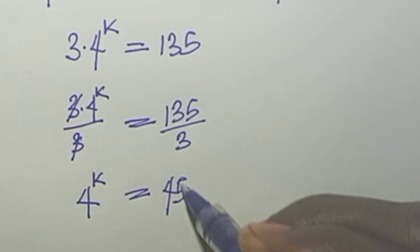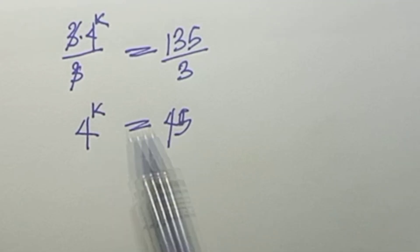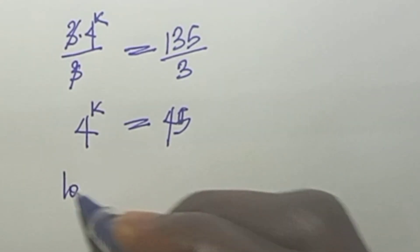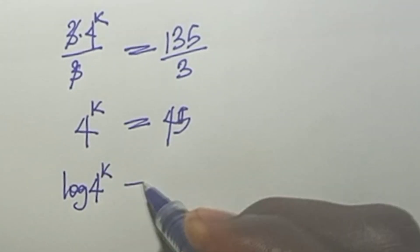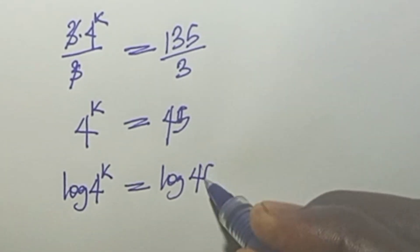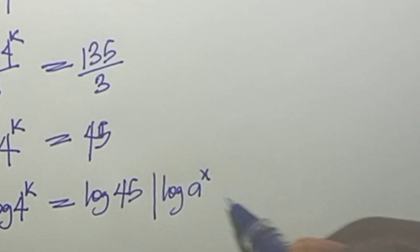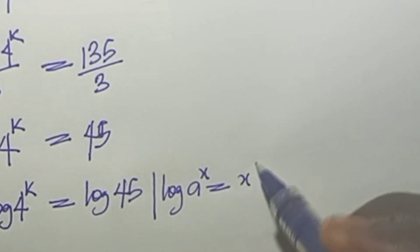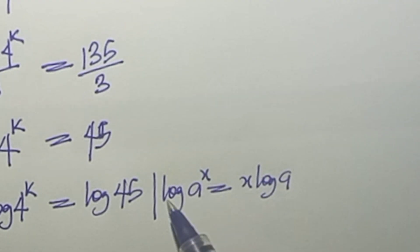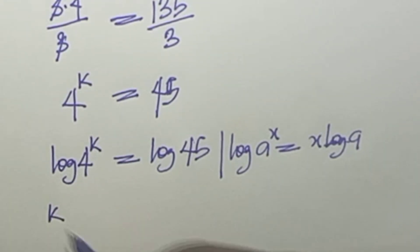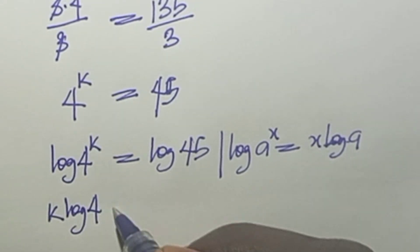In the next step, we take log base 10 on both sides, so that log of 4 to the power of k equals log of 45. Using the rule that log a to the power of x equals x log a, the power comes down to multiply the log. So the next line becomes k log 4 equals log 45.